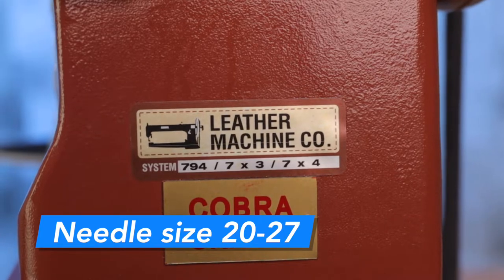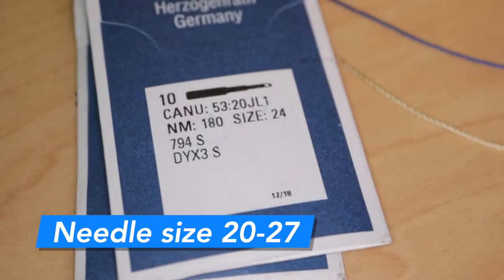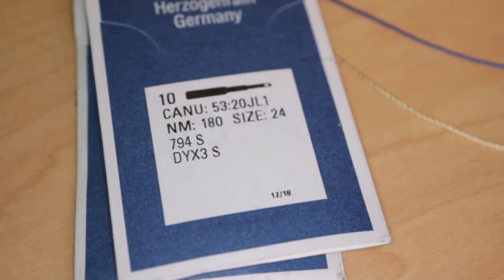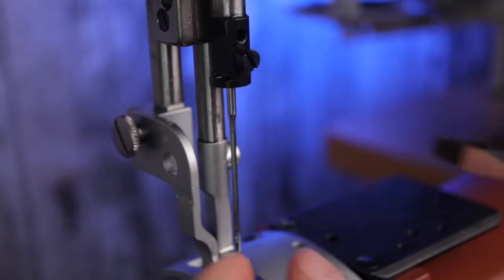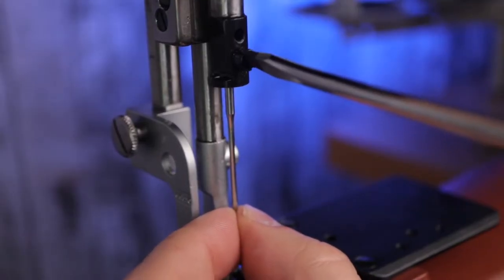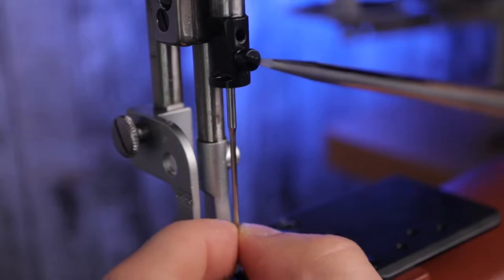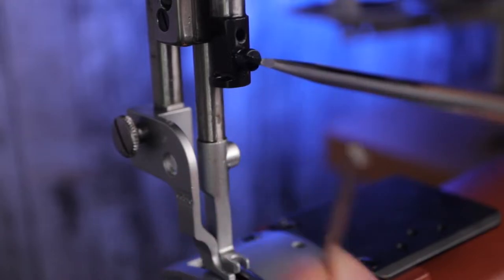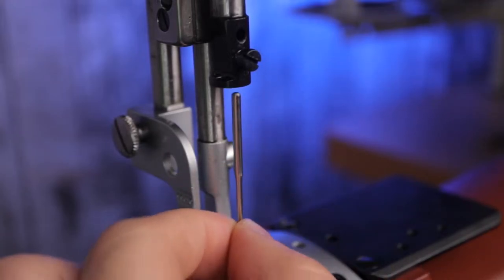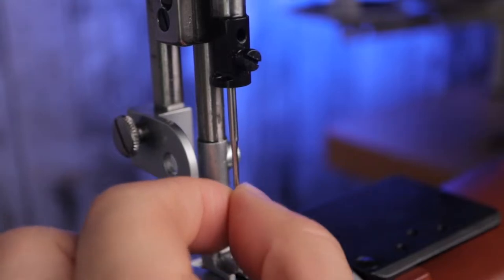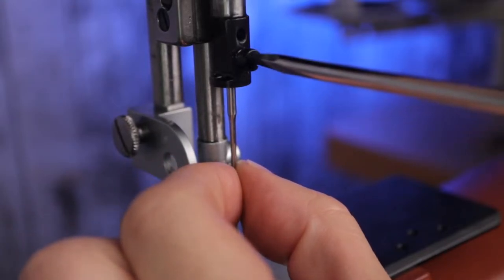To change the needle, unscrew the needle locking screw and slide the used needle downwards to remove it. Next, grab your fresh replacement needle and slide it all the way up into the needle bar and lock it into place.